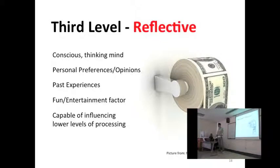The last but not least level is actually the reflective level. It's our only conscious thinking mind. Whatever you're thinking of is, in fact, reflective level. So, it's basically our personal preferences and opinions that carries on, that is derived from our past experiences, which can include our education, upbringing, cultural factor, and so on. It sometimes can be fun and entertaining factor. As you can see from this example, money toilet roll. I'm quite poor, you know. Sometimes I want to feel like I'm a rich kid or something. I will probably buy this because it's fun to rub money against my behind, right? So, being the highest level, as you can see from the diagram just now, reflective level is capable of influencing the lower level of processing.